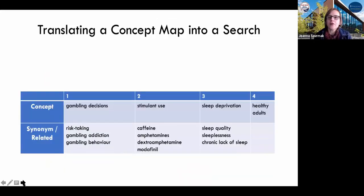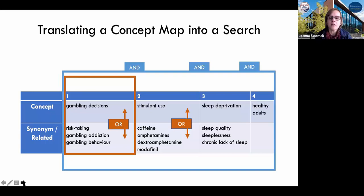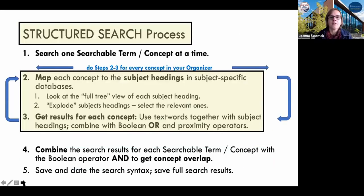We're thinking about how to translate a concept map into a search. It's actually quite simple. We map each column. Here we have four concepts, four columns: gambling decisions, stimulant use, sleep deprivation, healthy adults. Connect all the terms that are related to each other with ORs, and then connect each of the terms once they have been fully exploded and fully explored with an AND. The process is so simple but so important to make sure that we make reproducible robust searches.